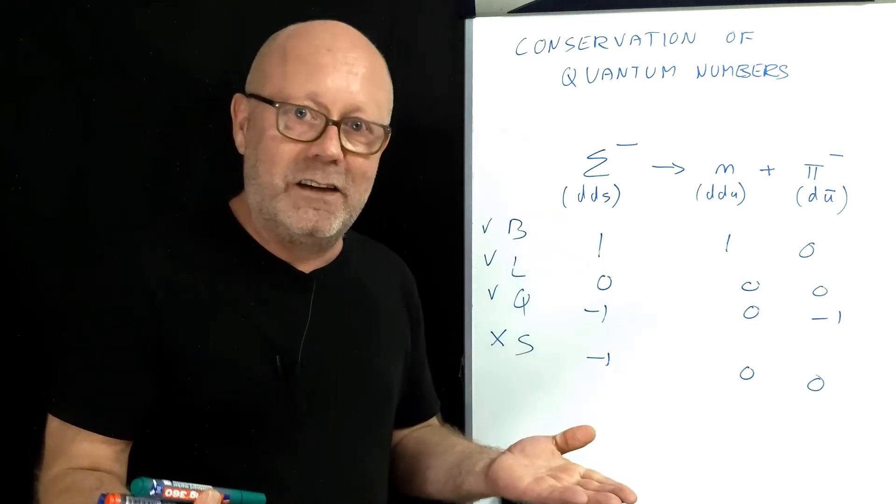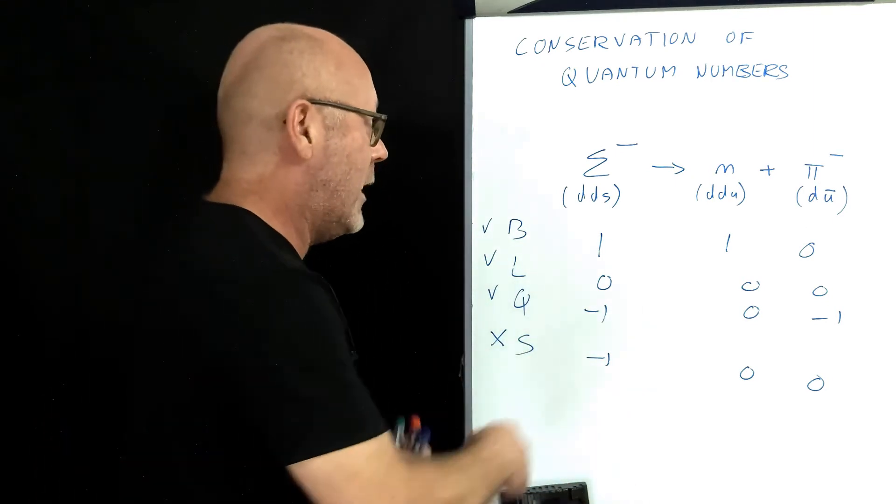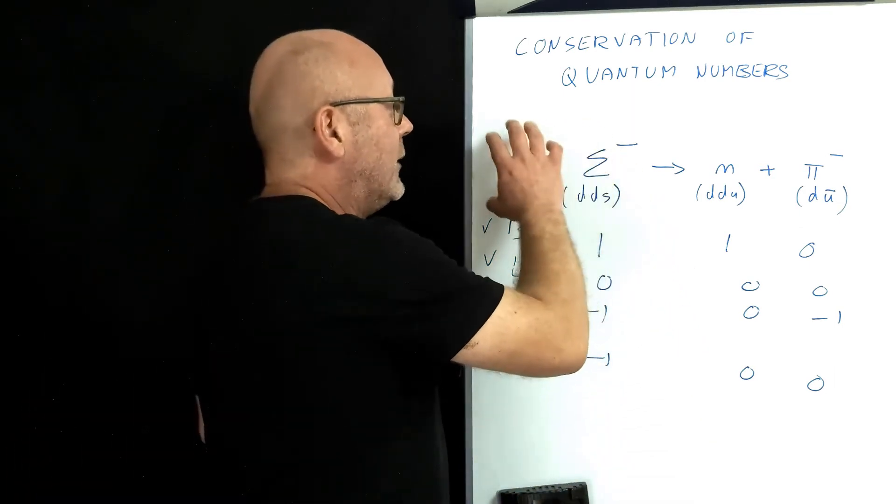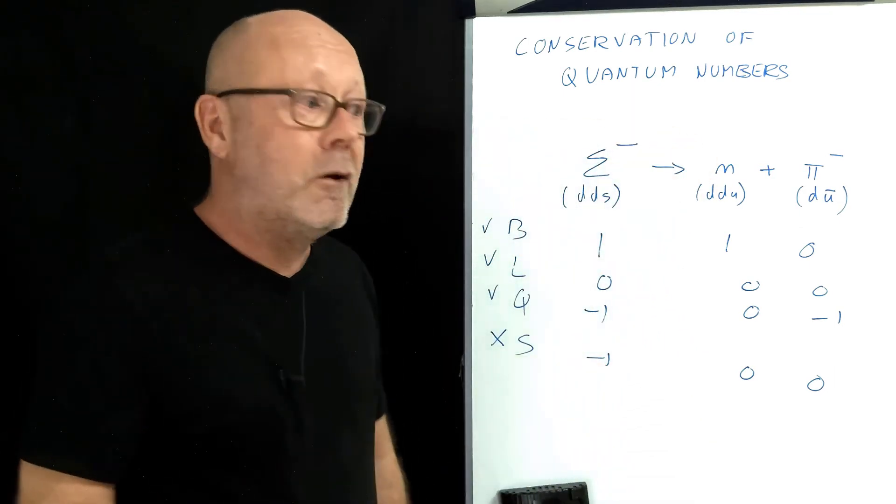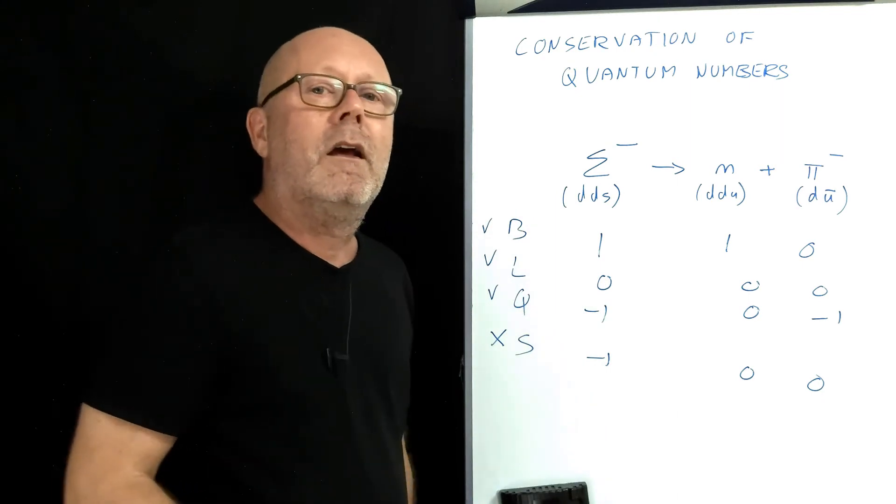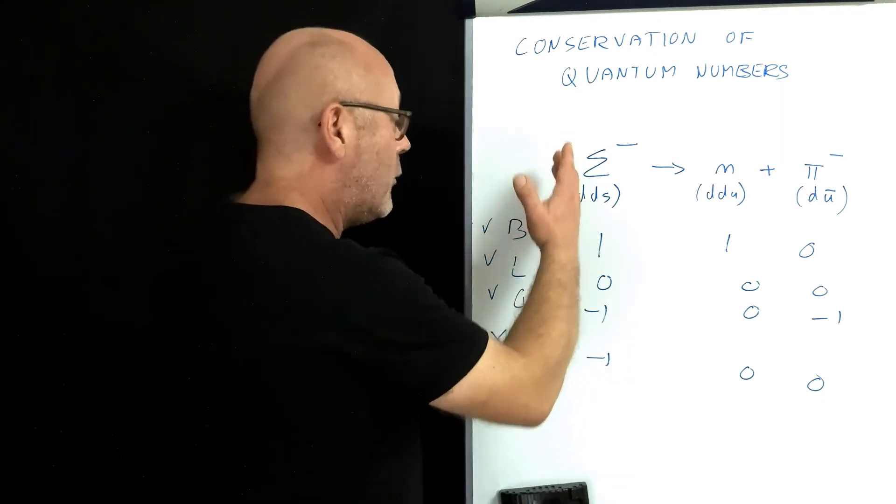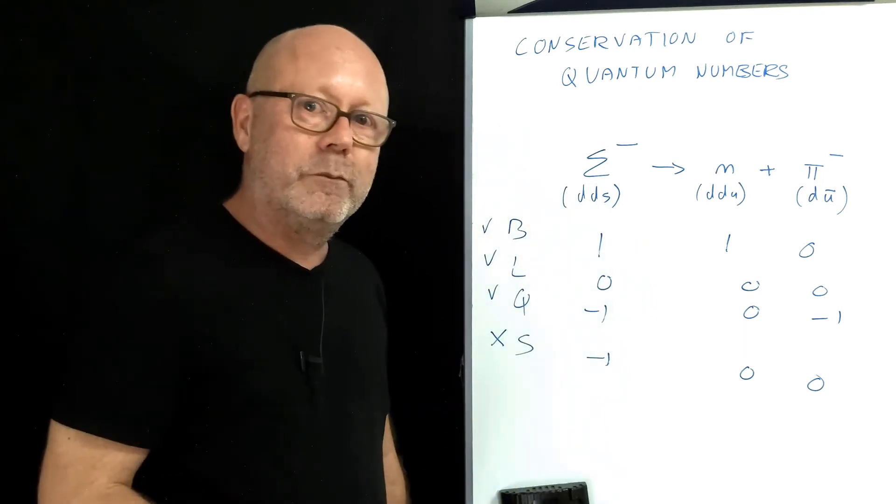However, in the text you should have information about what force is involved. If they say it is a strong force that creates this reaction, then you know it's not possible. But if the text says it is a weak force which is involved, then the reaction is still possible. Got it?